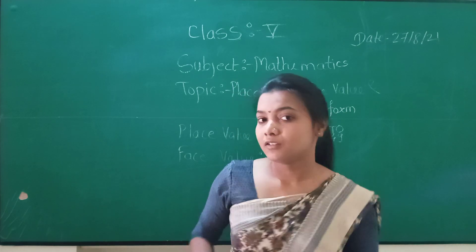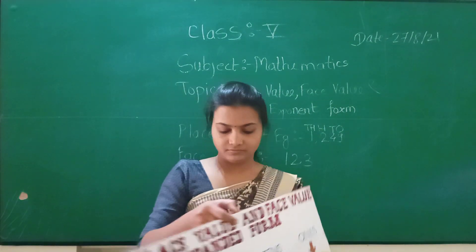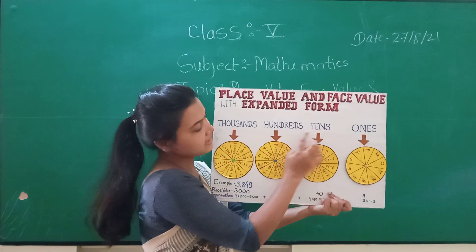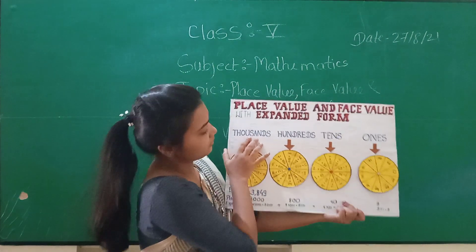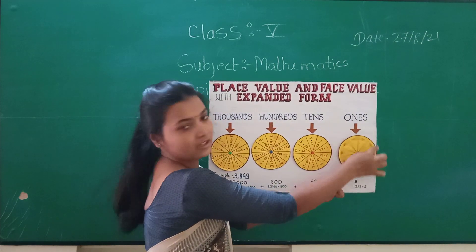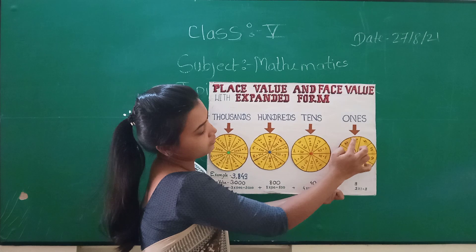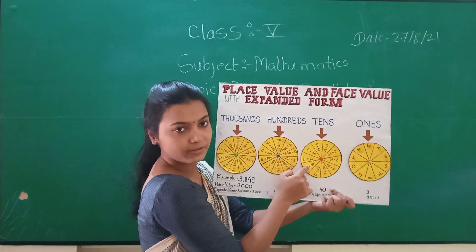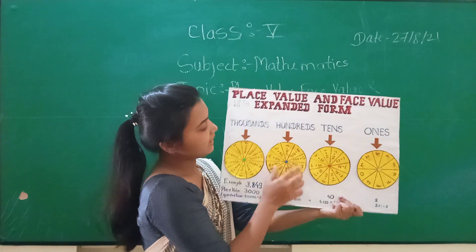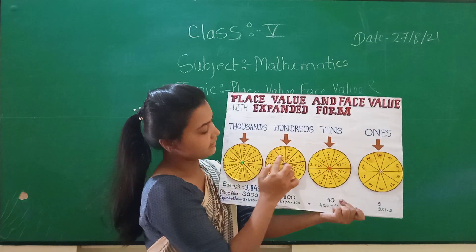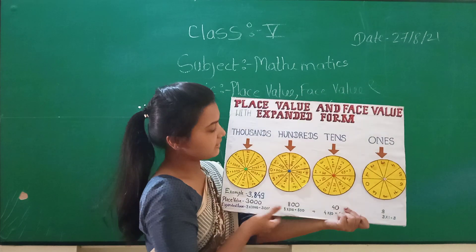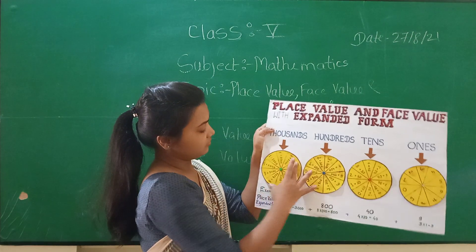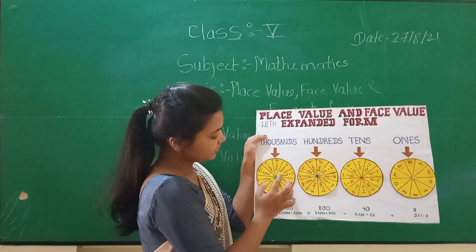Now I am showing you a chart. In which, this is the 1's place, this is the 10's place, this is the 100's place, and this is the 1000's place. The numbers in the 1's place are of the form 1, 2, 3, 4 up to 9. The numbers in the 10's place are of the form 10, 20, 30, 40 up to 90. In the 100's place: 100, 200, 300, 400, 500 up to 900. And in the 1000's place, the numbers are of the form 1000, 2000 up to 9000.